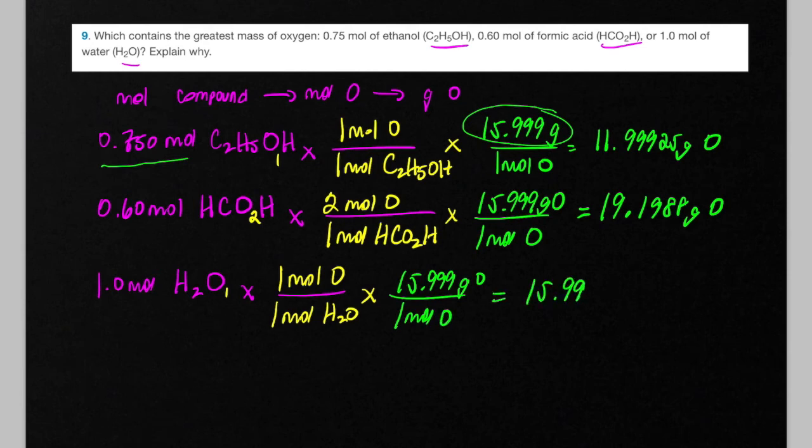And then we would want to multiply that by 15.999. These are easy numbers, we don't need our calculator for this one. This would be 15.999 grams of oxygen. So let's analyze what's going on here. This one has the greatest mass of oxygen—it's got about 20 grams of oxygen.